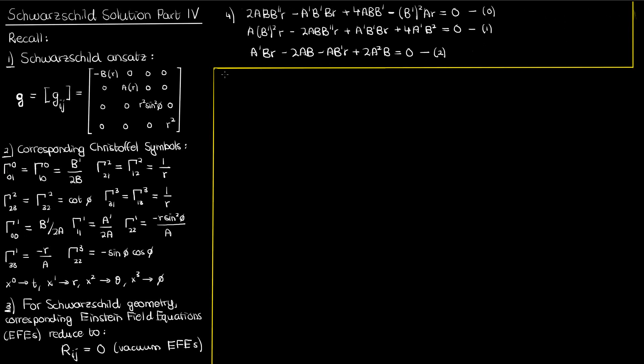Recall from our previous video that we found these three Ricci tensor components corresponding to our Schwarzschild ansatz and set those to 0 to satisfy the vacuum Einstein field equations. The equations corresponding to the Ricci tensor components being 0 we labeled as 0 to 2 for the R00 to R22 components respectively. The R33 component turned out to be redundant because it's the same as R22 except without the sine squared phi. Meanwhile, the off-diagonal Ricci tensor components all become identically 0 so I haven't included them here.